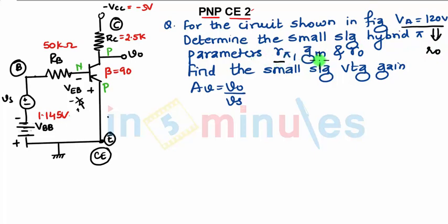Determine the small signal hybrid pi parameters. We need to find the values of Rpi, GM and RO. And finally, the voltage gain VO by VS for the PNP type of configuration.